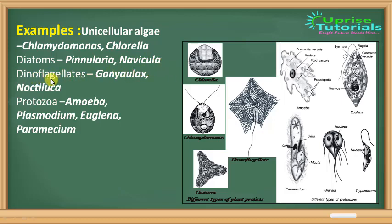More examples of Protista include dinoflagellates such as Gonyaulax and Noctiluca. Protozoans include Amoeba, Paramecium, Euglena, and Plasmodium.